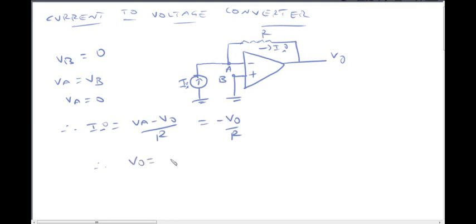Since V_a is zero, we get minus V_naught by R. So V_naught equals minus I_i into R.